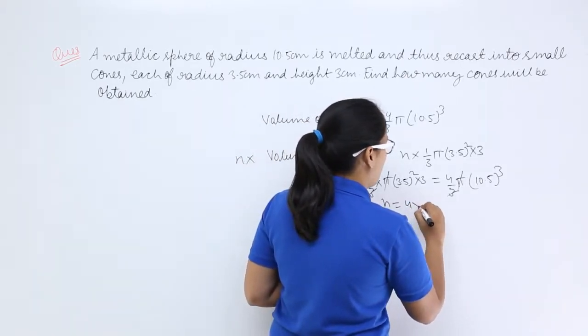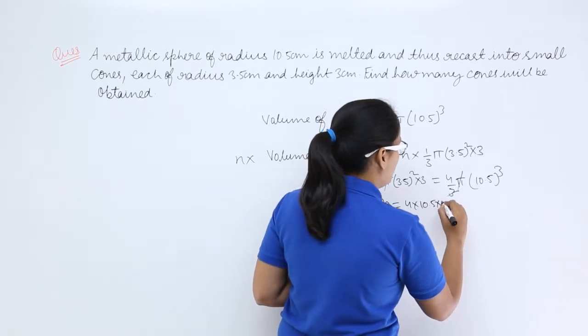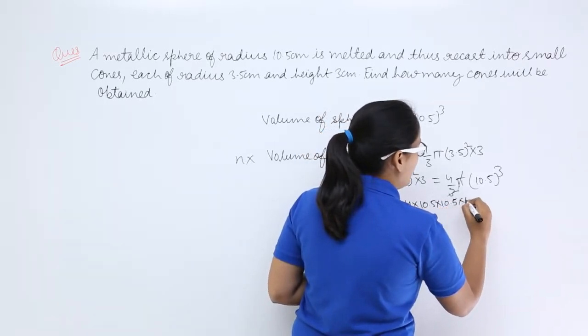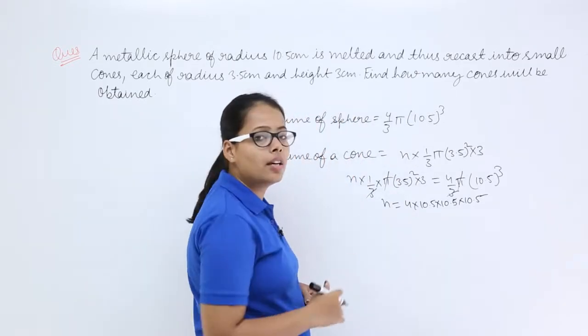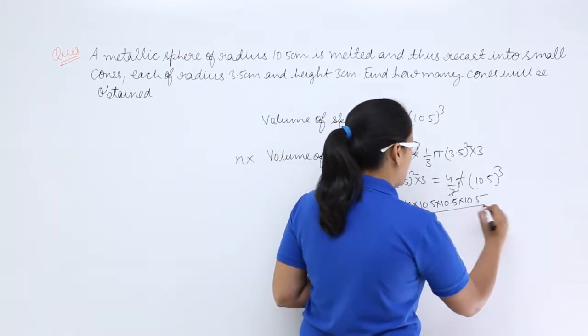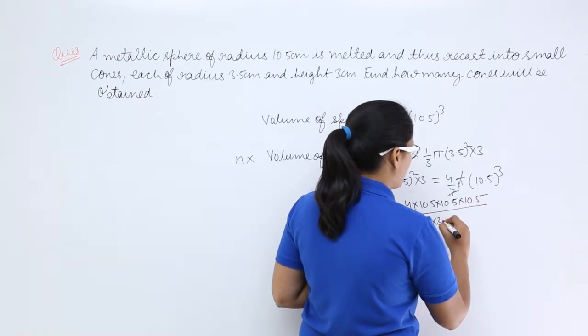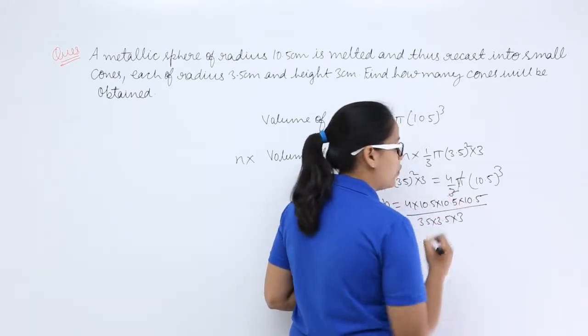And what will you get? n is equal to 4 × 10.5 × 10.5 × 10.5, as the power of 10.5 is 3. That's why I have written it 3 times in multiplication. Now you can write 3.5 as 3.5 × 3.5 and 3.